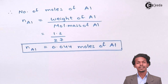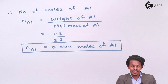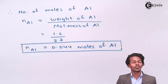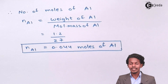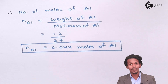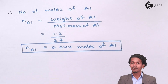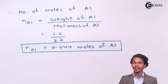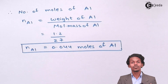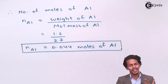So the moles of aluminium have been calculated. We cannot directly calculate the number of moles of zinc because its mass is not provided — that is what we have to find. We will estimate the number of moles of zinc by applying Faraday's Second Law. For that, we need to understand the mole ratio and how to calculate it.